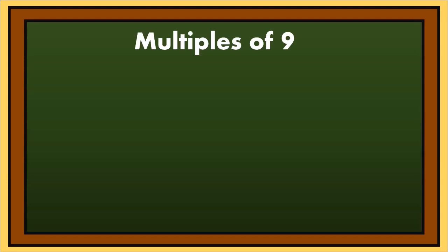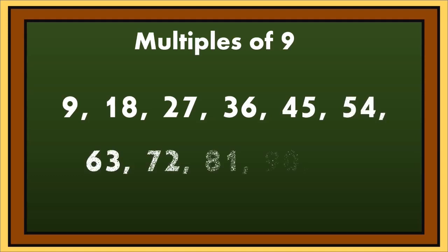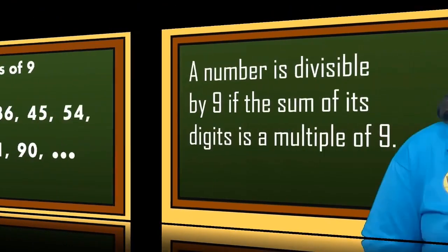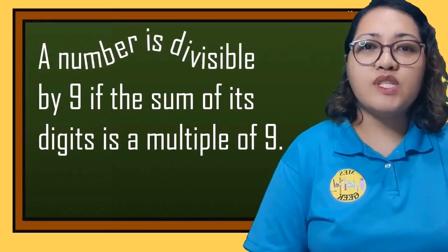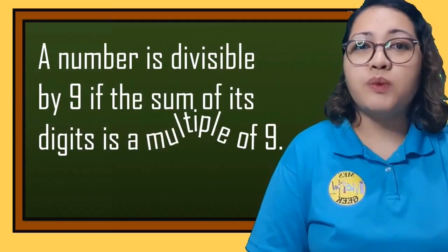This time, let's recall the multiples of 9. The multiples of 9 are 9, 18, 27, 36, 45, 54, 63, 72, 81, 90, and many more. A number is divisible by 9 if the sum of its digits is a multiple of 9.